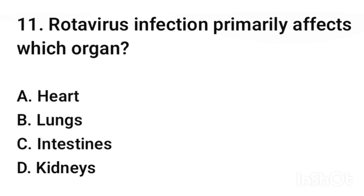Question number 11. Rotavirus infection primarily affects which organ? The correct answer is option C: intestines.